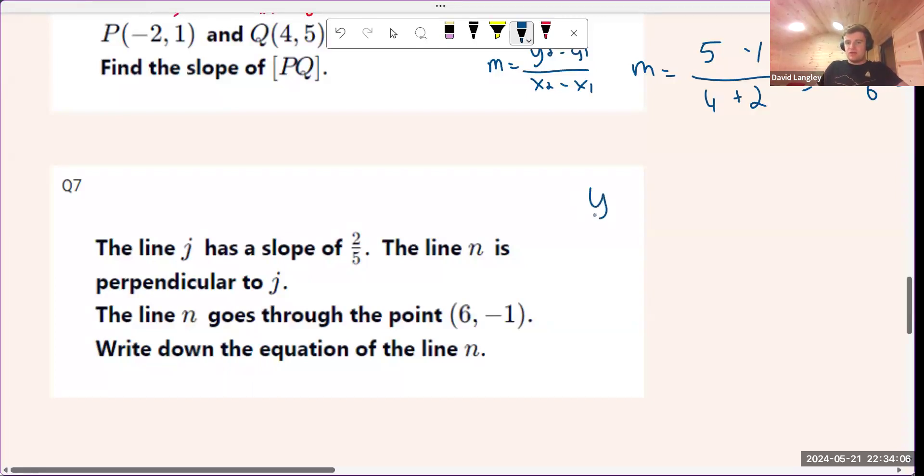What do we need to find the equation? Well, the formula is y minus y1 equals m times x minus x1. We need x1 and y1, which is a point. We have that. We need the slope.